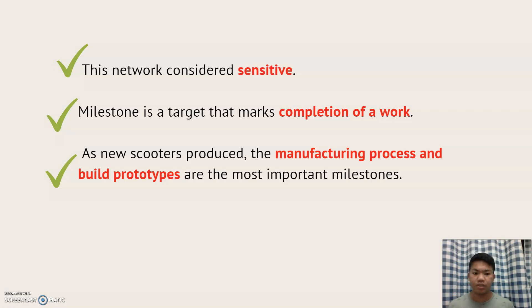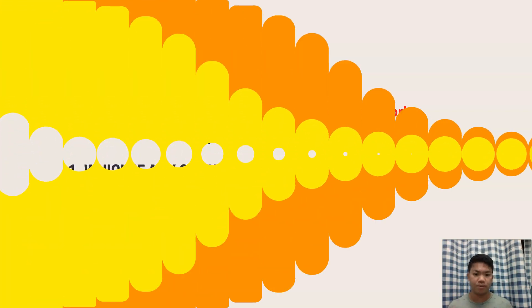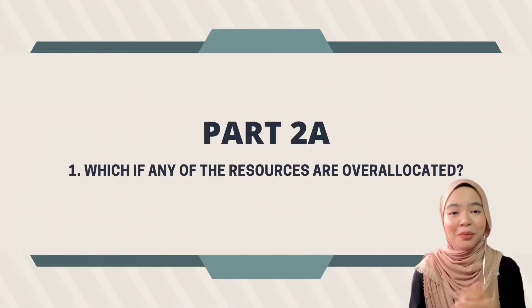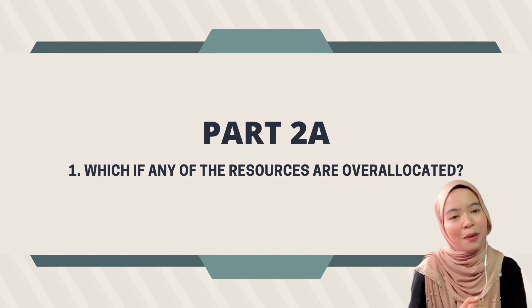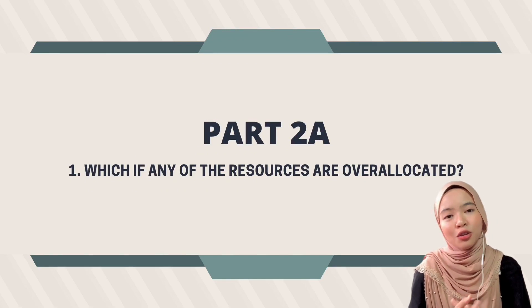We can conclude this network is considered sensitive as it has numerous critical paths. As we know, a milestone is a target that marks completion of work. For this project, new scooter production, the manufacturing process, and building prototypes are the most important milestones.